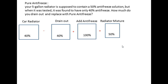We label: car radiator at 40% mixture, minus we drain out 40% (because that's what's in there), plus we add antifreeze which is 100% antifreeze, and that will give us a radiator mixture of 50%.